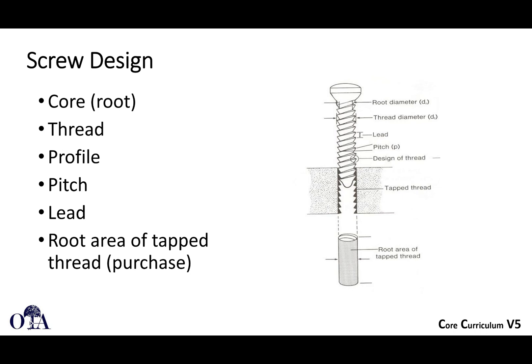Here's another look at screw anatomy showing different diameters. The root diameter — in our example, the 2.5-millimeter root or shaft — and the thread diameter. When doing a lag screw, you take the 3.5-millimeter drill first and drill the gliding hole. That 3.5-millimeter accommodates the full threads so the screw slips right in. Then you drill the pilot hole with a 2.5-millimeter to allow the threads to engage that portion.